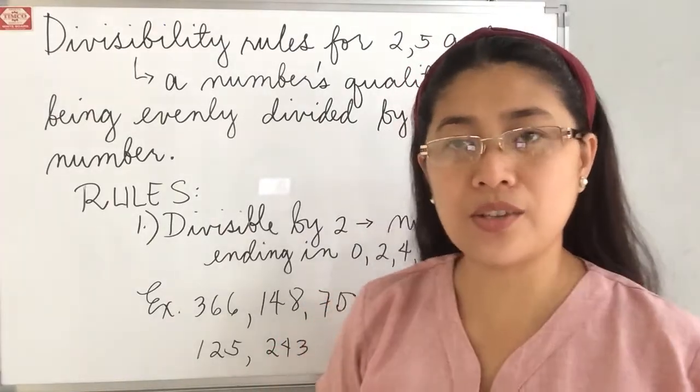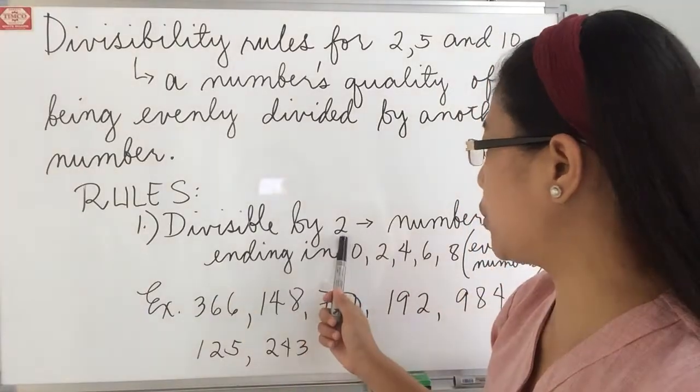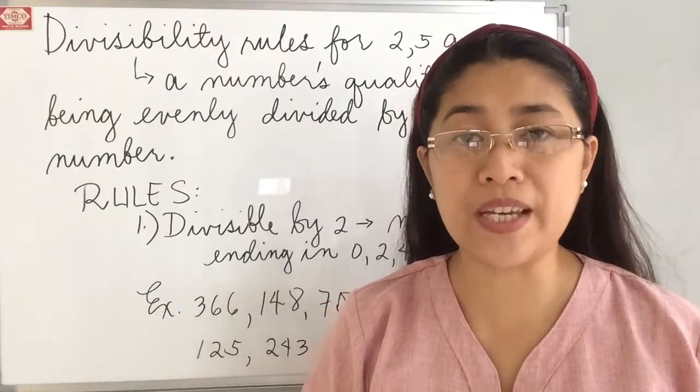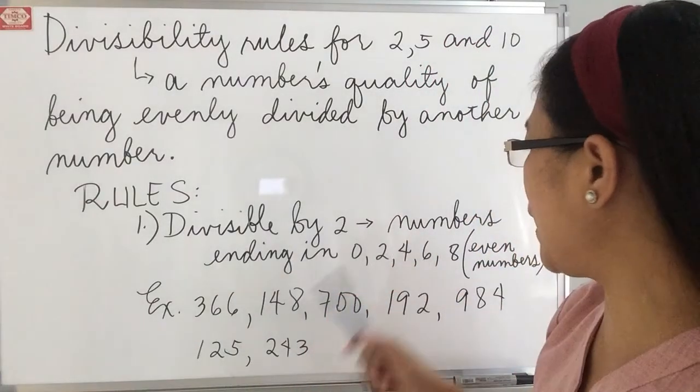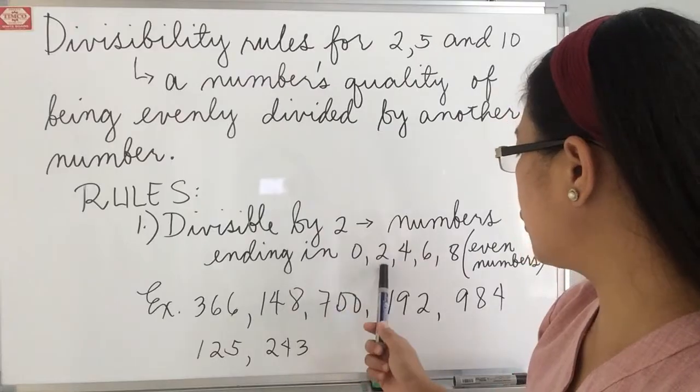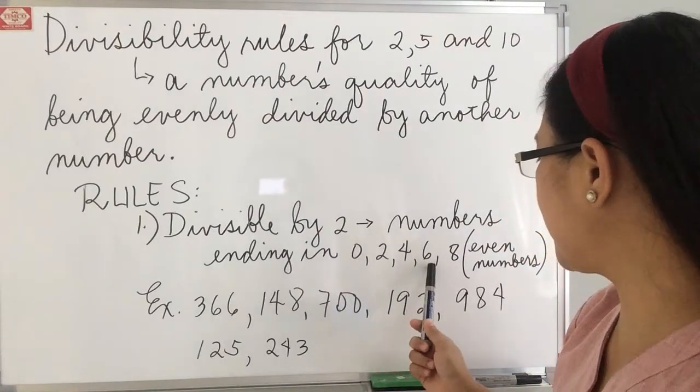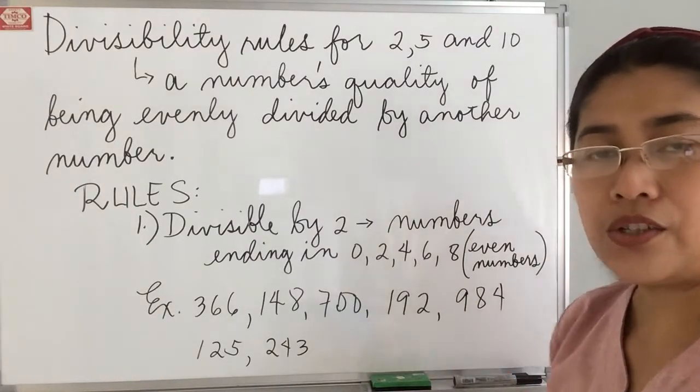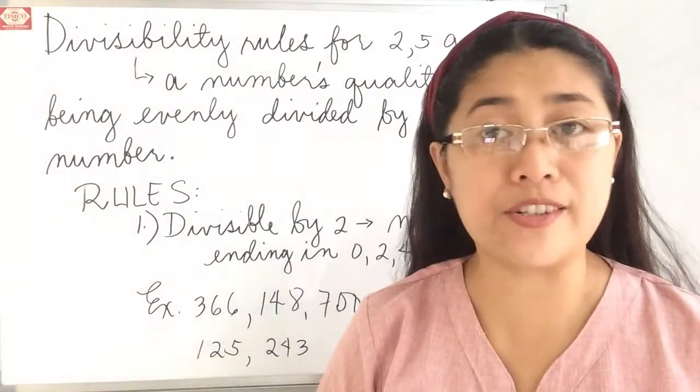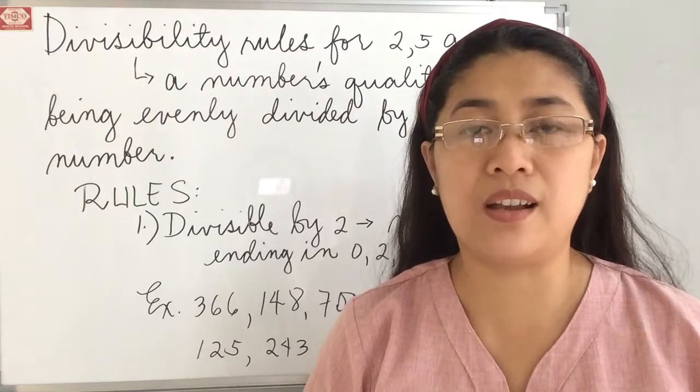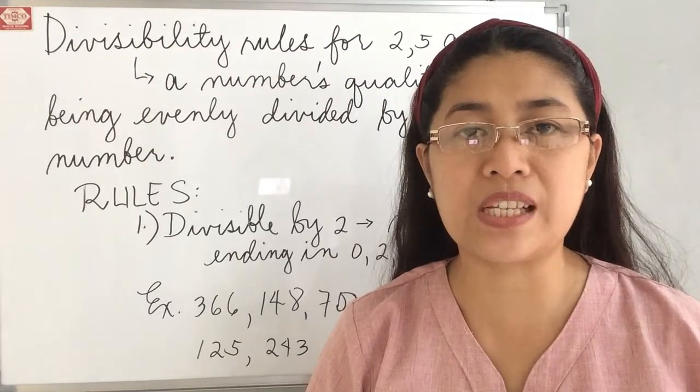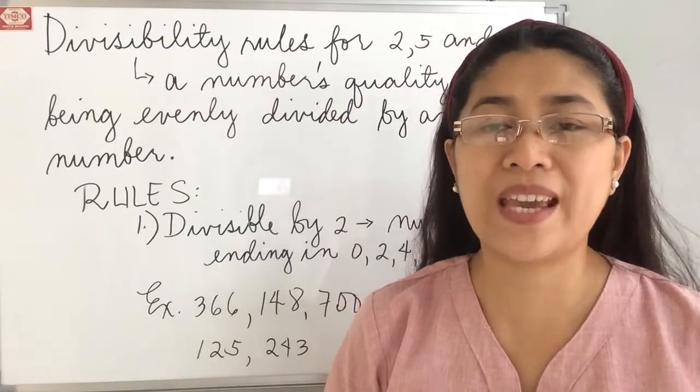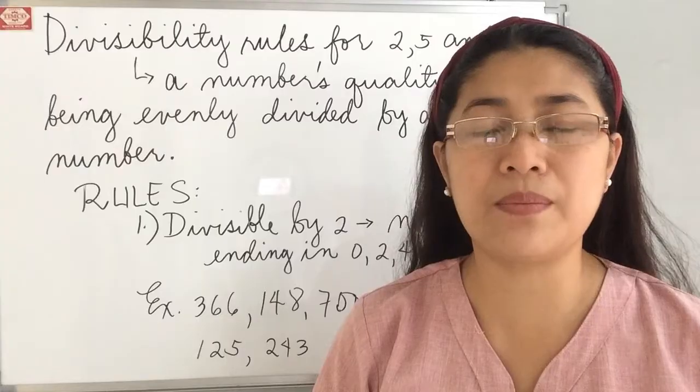Now let's talk about the rule for number 2. A number is divisible by 2 if it ends with 0, 2, 4, 6, or 8, or what we call even numbers. So no matter how large a number is, if it ends with 0, 2, 4, 6, 8, or what we call even numbers, you can divide it by 2.